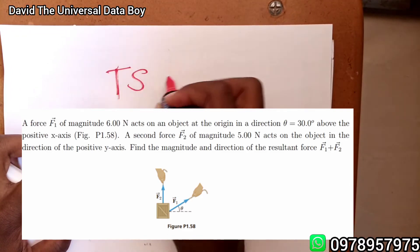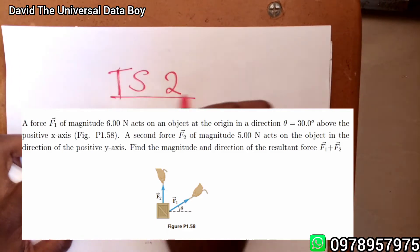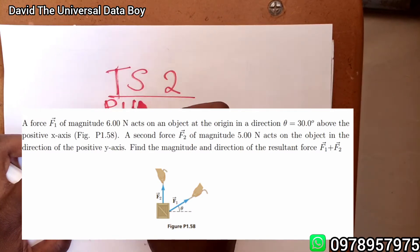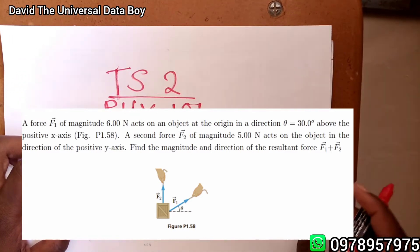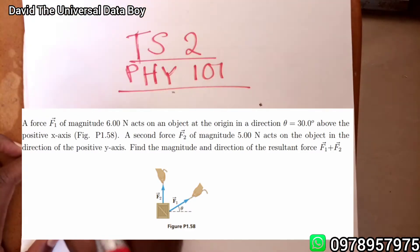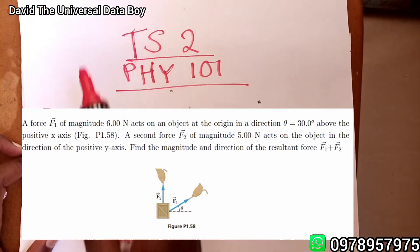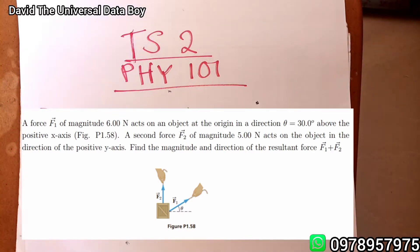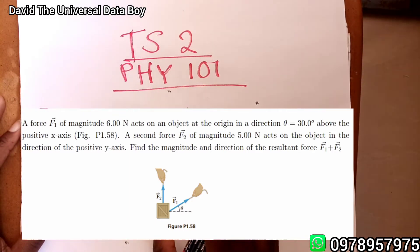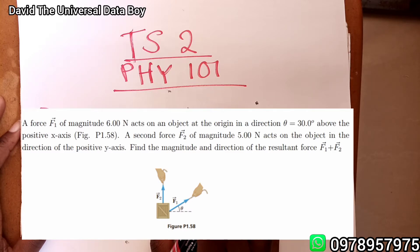Question 5 of PHY 101. A force of magnitude 6.00 newtons acts on an object at the origin in a direction theta equal to 30.0 degrees above the positive x-axis. A second force F2 of magnitude 5.00 newtons acts on the object in the direction of the positive y-axis. Find the magnitude and the direction of the resultant force.